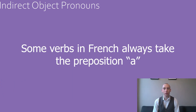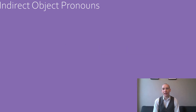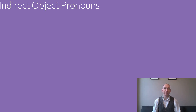In French, verbs that are always conjugated with the preposition à are verbs that take indirect objects. For example, téléphoner à — to telephone someone. Anytime you use these verbs, or anytime you are doing something for someone, you will be using an indirect object.